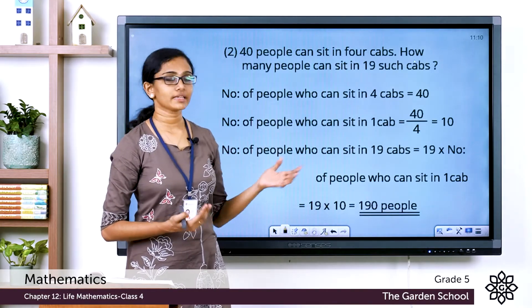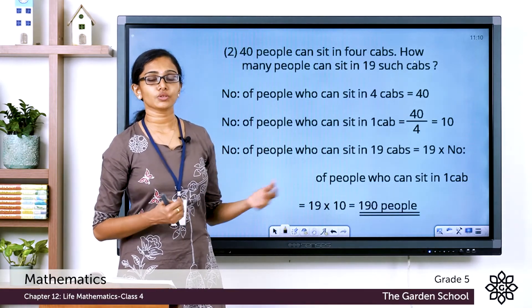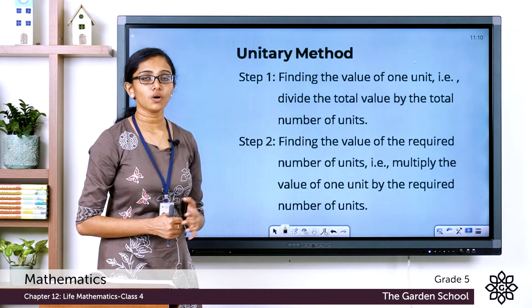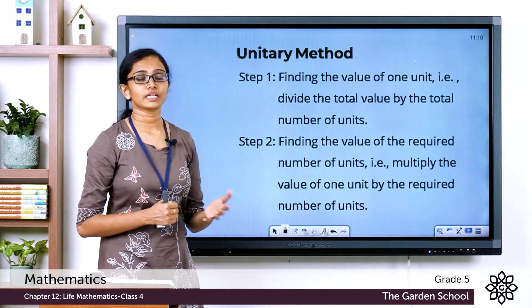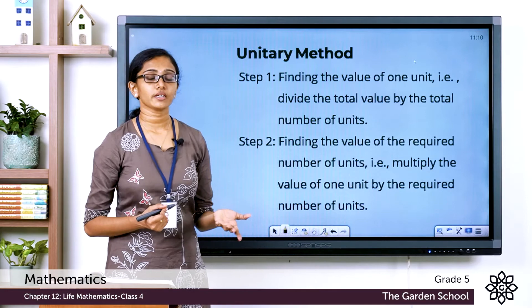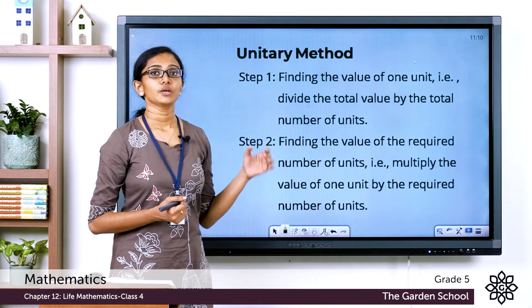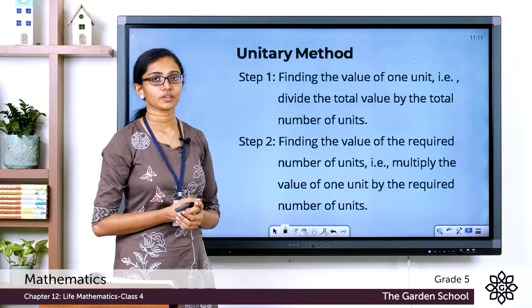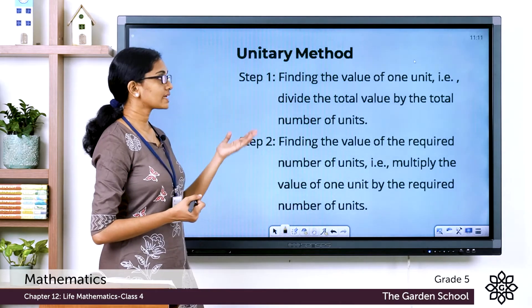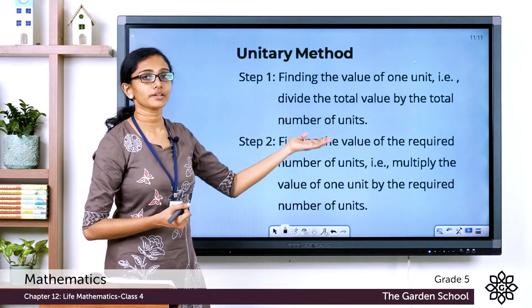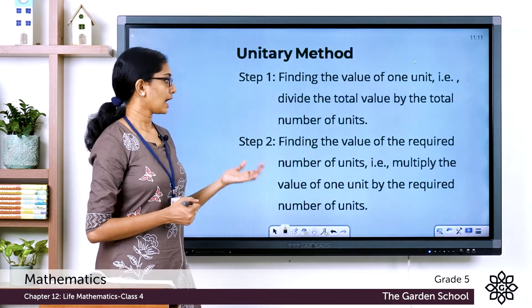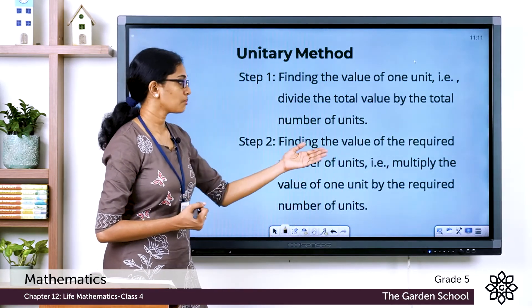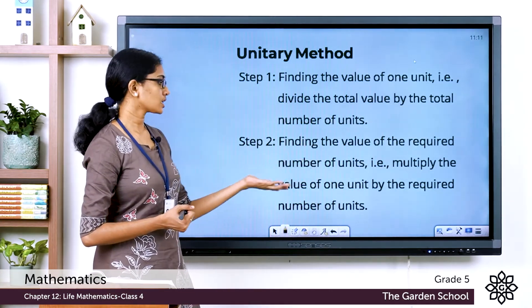I hope you are clear with the two examples. We solved these using the unitary method. In unitary method there are two steps: first, find the value of a single unit by dividing the total value by the total number of units; then multiply the value of one unit by the required number of units to get the answer.